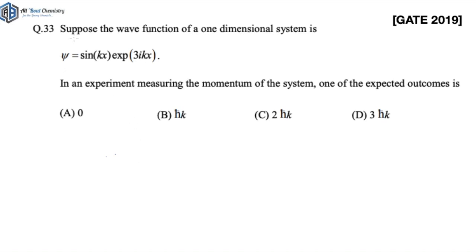The question says that suppose the wave function of a one-dimensional system is given by this equation: psi is equal to sine(kx) times e to the power 3i·kx. Now, in the experiment measuring the momentum of the system, one of the expected outcomes is...